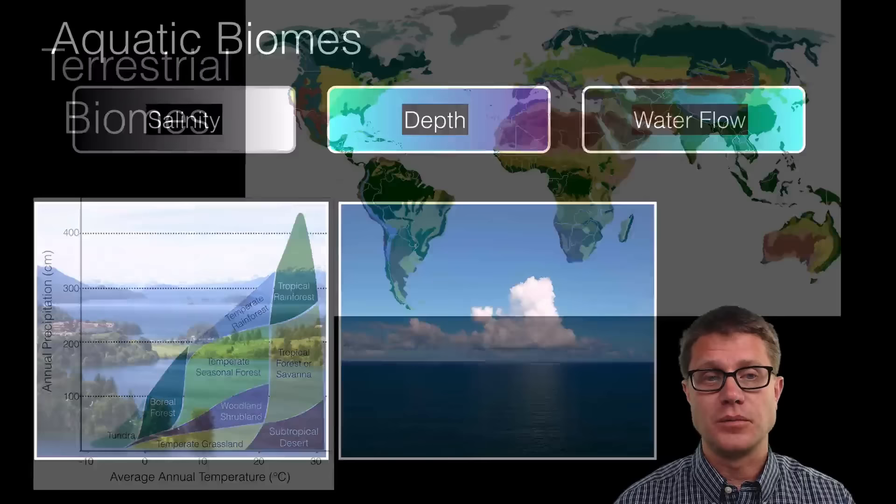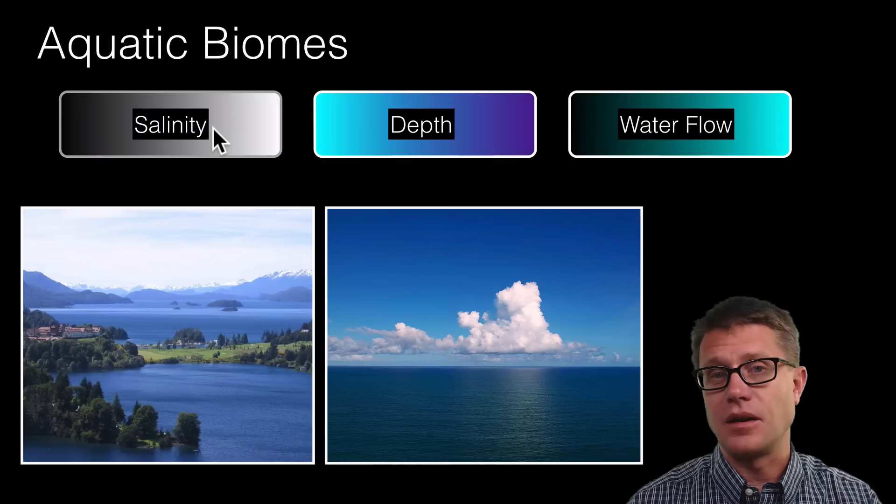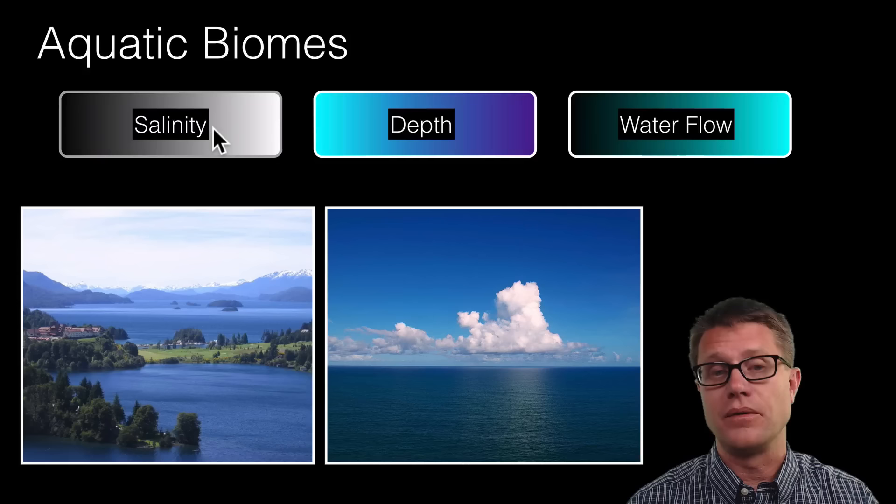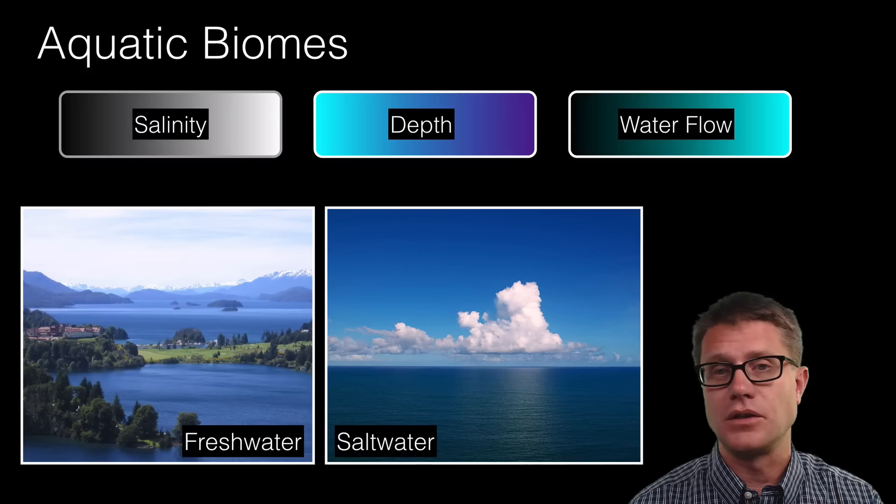If we start looking at aquatic biomes it is not temperature and precipitation because water exists. So it is going to be salinity, the amount of salt, the depth within that water and then the flow of the water. The first way to divide the aquatic biomes is those that are fresh water and those that are going to be salt water.